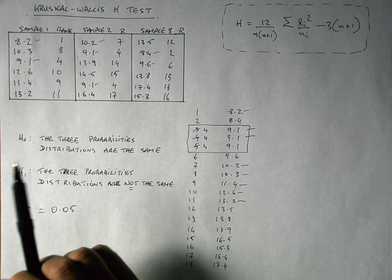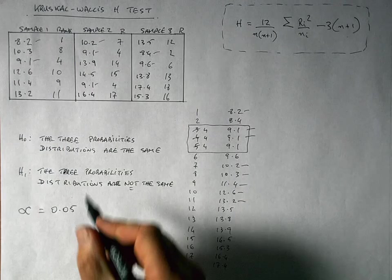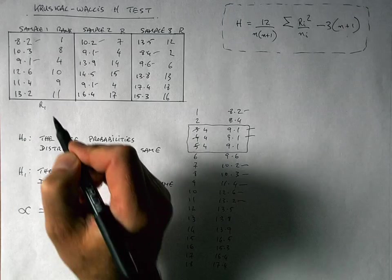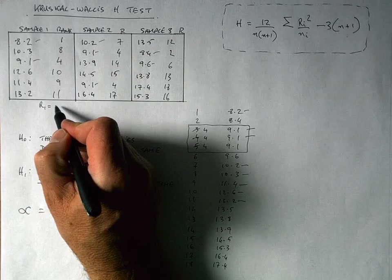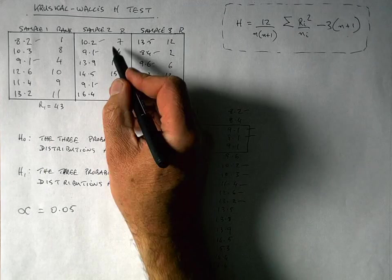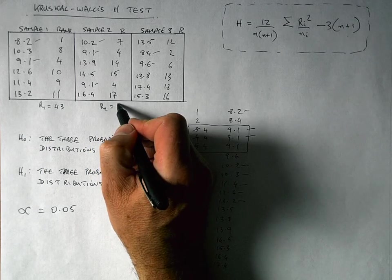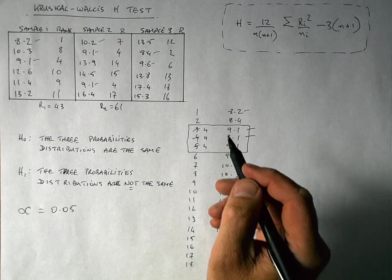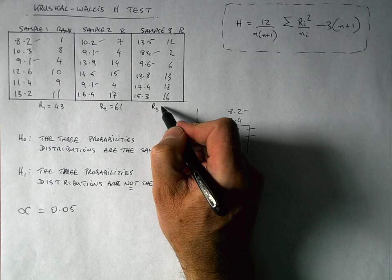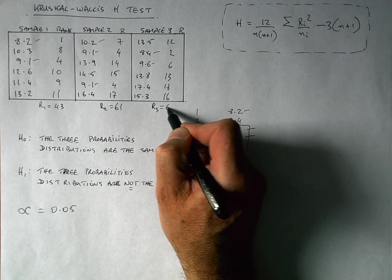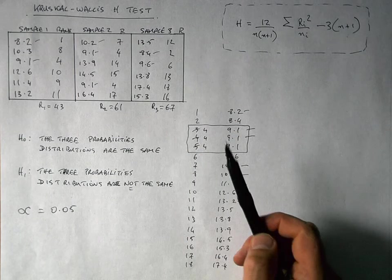Now it's time to do some calculations. And we need to sum up each of the rankings for each of the three samples. So I'm going to call the sum here R1 for the sum of the ranks for number 1. And when I add up these six values here, I get a value of 43. And I'm going to sum up the values here for R2. And that's when I add all of those up, I get a value of 61. And finally, when I sum up the ranks for a sample tree called R3, I get a value of 67. So that's the first bit of the computing done.